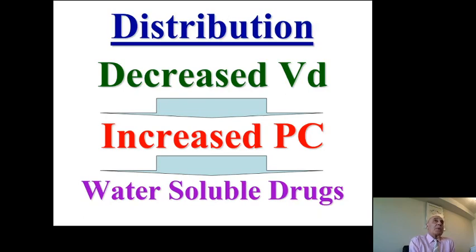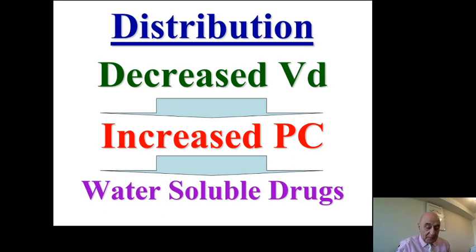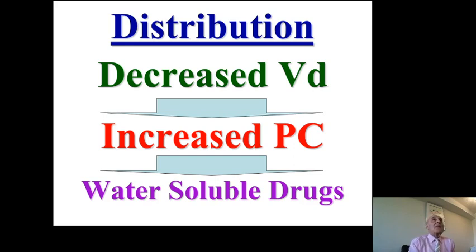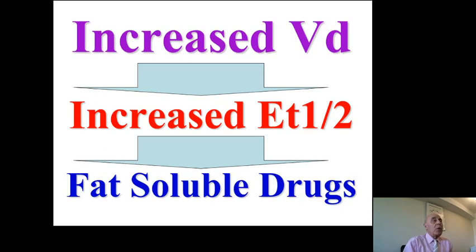Drug distribution depends on many factors including blood flow, plasma protein binding, and body composition. For lipophilic drugs, there will be an increase in the apparent volume of distribution because fat increases in the body with aging, so the drug is distributed more widely in fat. For water-soluble drugs, the volume of extracellular fluid is decreased, so distribution decreases and the drug level in plasma will be higher.